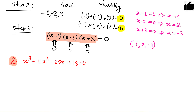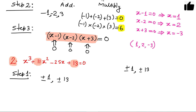Now consider the second problem. We again need to find three numbers whose sum equals eleven and whose product equals thirteen. The factors of thirteen are plus or minus one and plus or minus thirteen. We need to find which combination of three of these numbers satisfies both conditions.